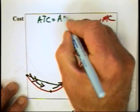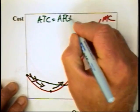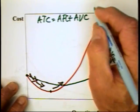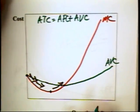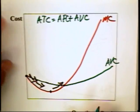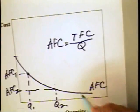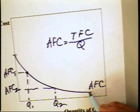We know that the average total cost is going to be equal to average fixed cost plus average variable cost. This means that what we are going to be doing is adding this average variable cost curve to this average fixed cost curve over here.